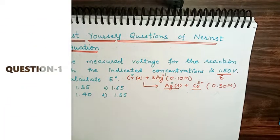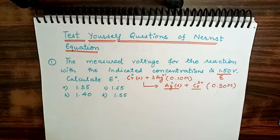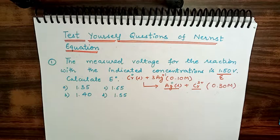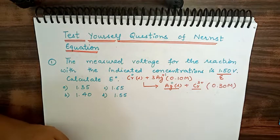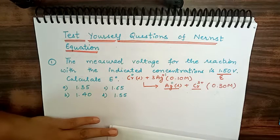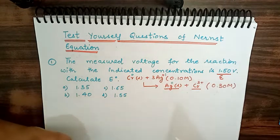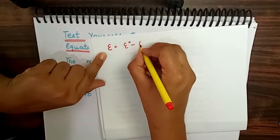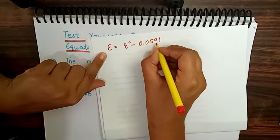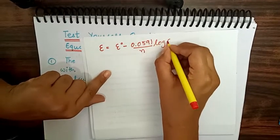The first question: the measured voltage for the reaction with the indicated concentration is 1.5 volts — calculate E°. We have to find E° by removing the measured concentration and indicated concentration values. The equation to use is the Nernst equation: E = E° − (0.0591/n) log Q.